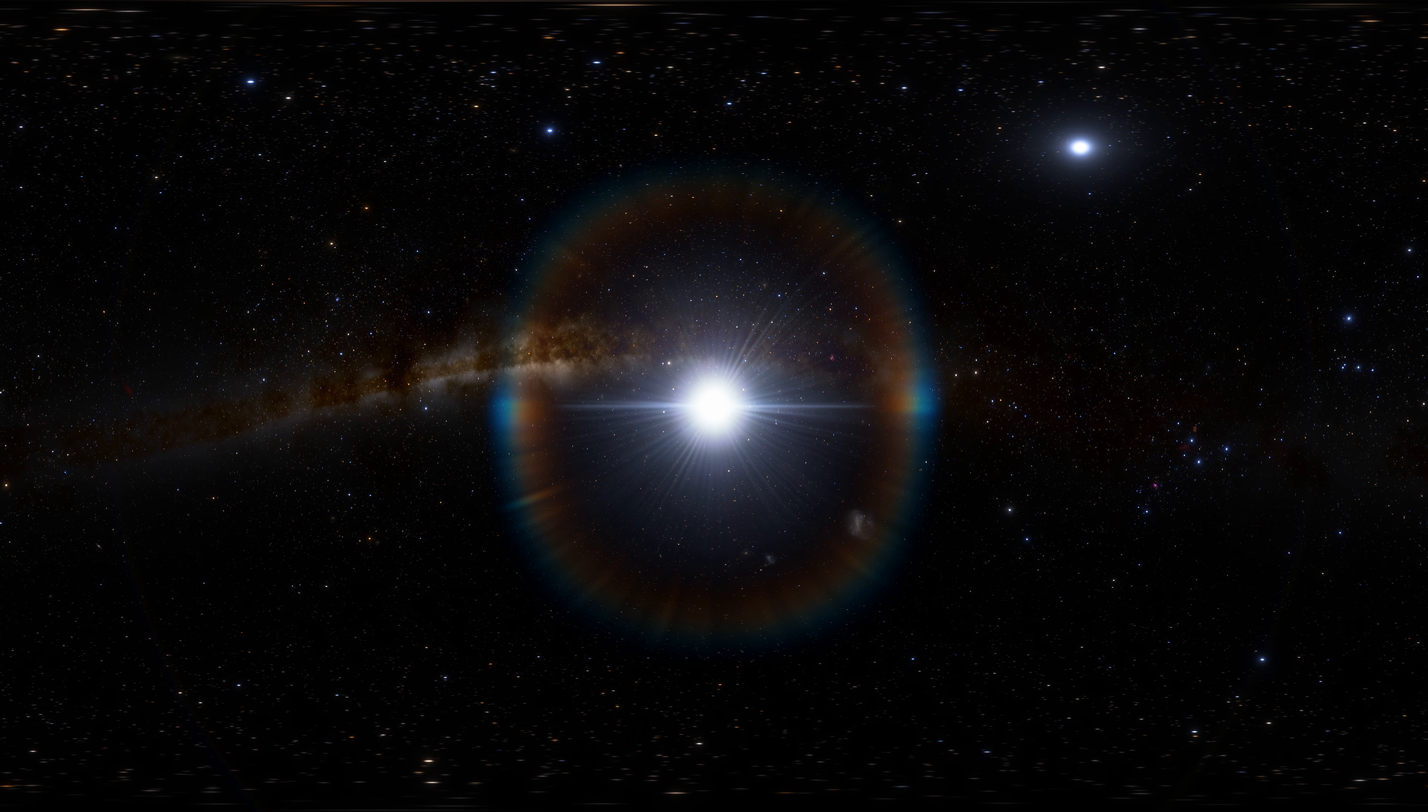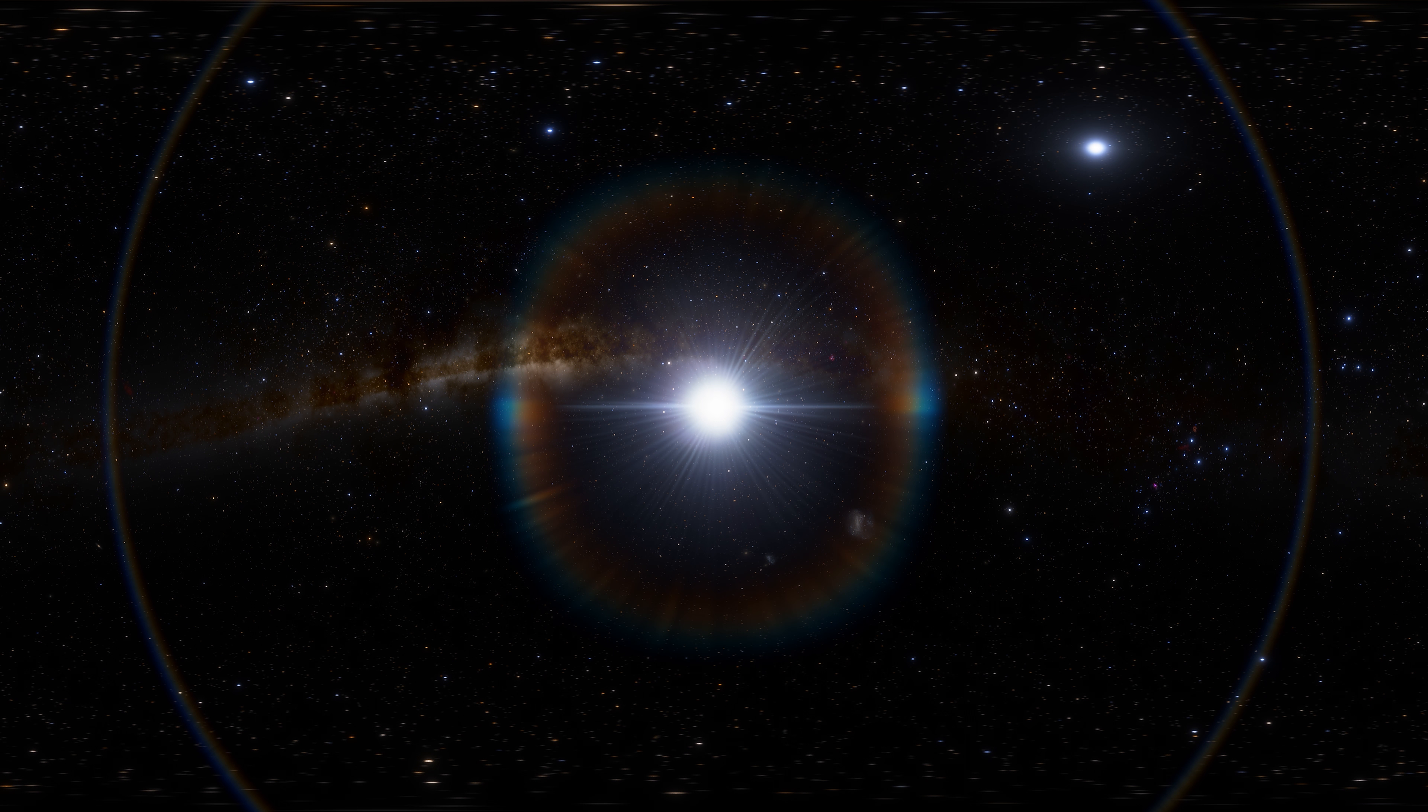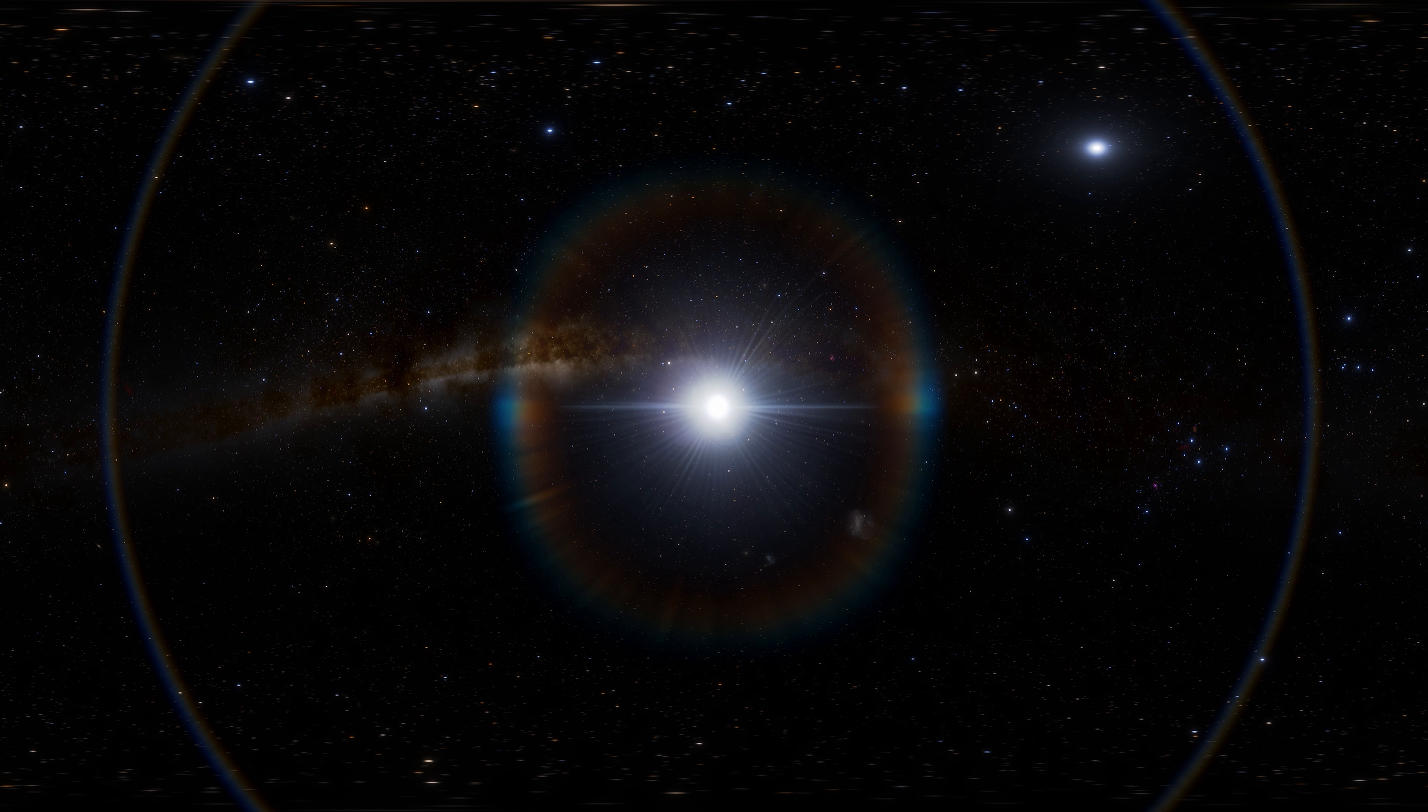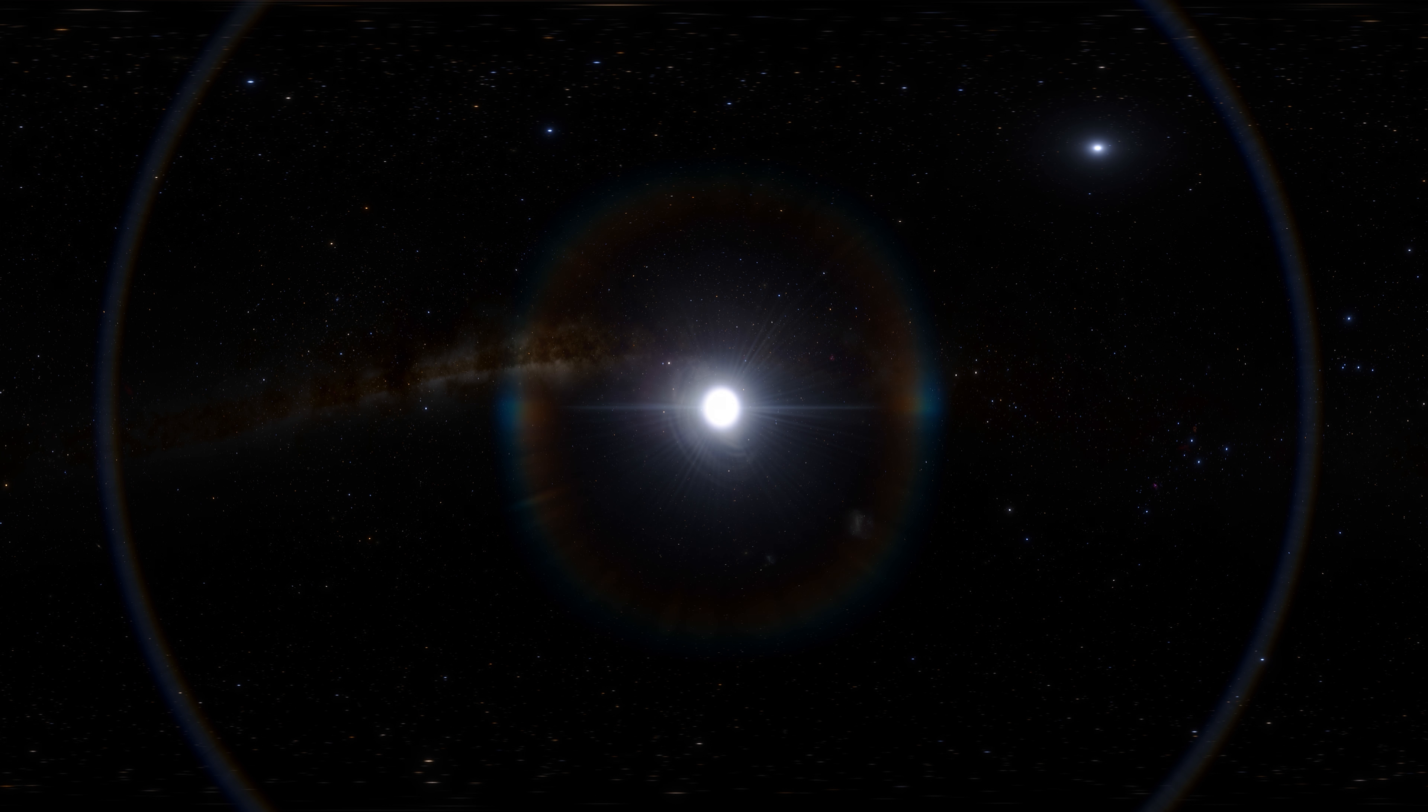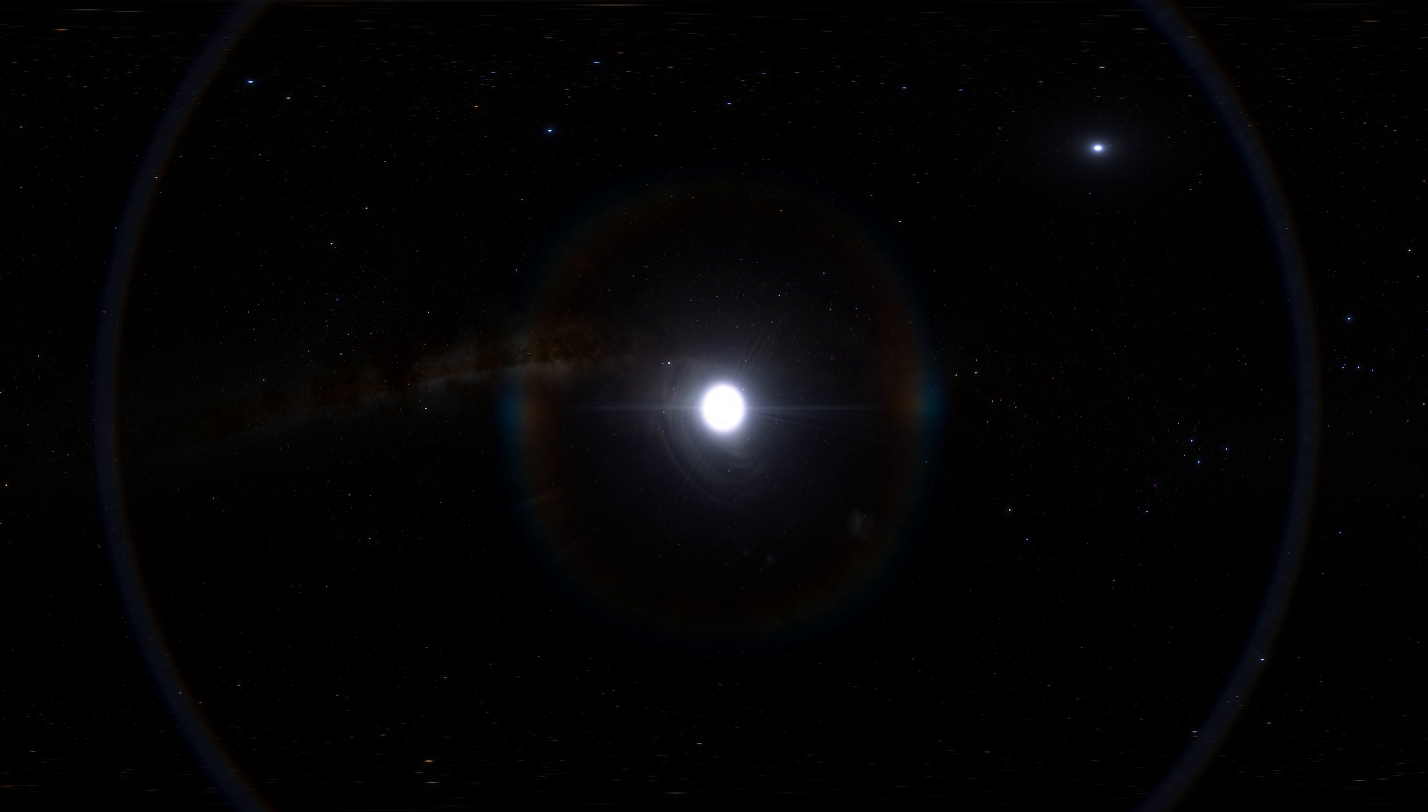The temperature of Antares' surface is about 3,660 Kelvin, which makes it quite a cold star. Because of that it has a distinctly reddish color. At this point, the star systematically discards its outer shells and forms a planetary nebula around itself. The mass of Antares is so big that it is an excellent candidate for a supernova.